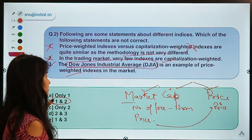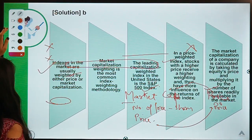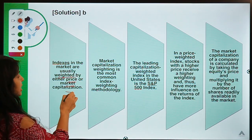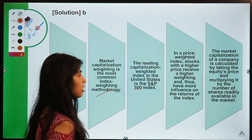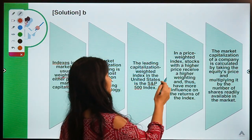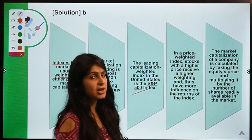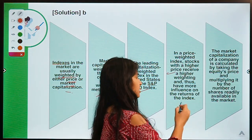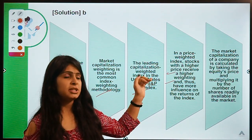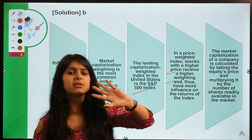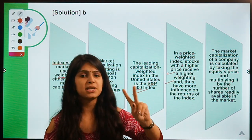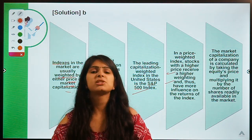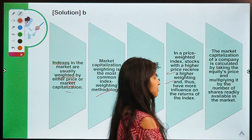Indices in markets are usually weighted either by price or market cap, with market cap being the most common methodology. The leading market-cap-weighted index in the US is the S&P 500. In a price-weighted index, stocks with higher prices receive higher weightage. The Dow Jones Industrial Average is one popular index that is based on price rather than market cap — that is why statement three is correct.